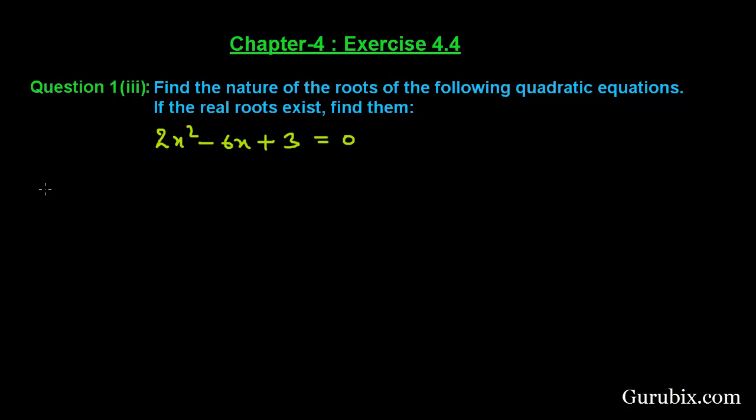Let us see how to solve this question. First, we shall collect the given quadratic equation and write it in its standard form: 2x² - 6x + 3 = 0. Here a = 2, b = -6, and c = 3.